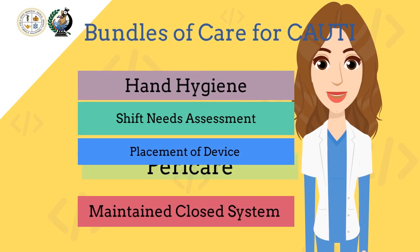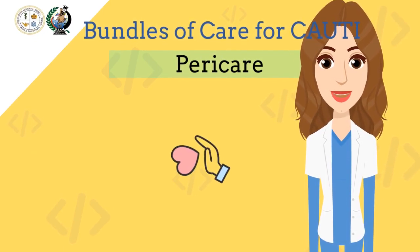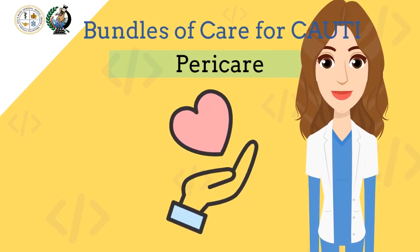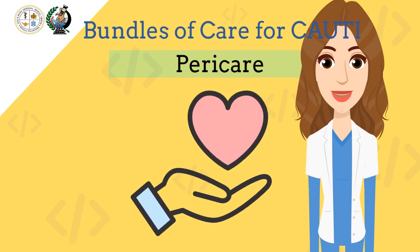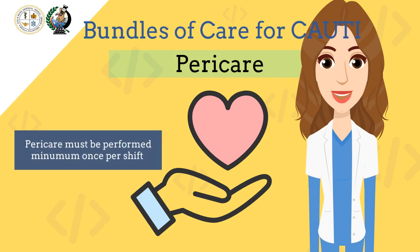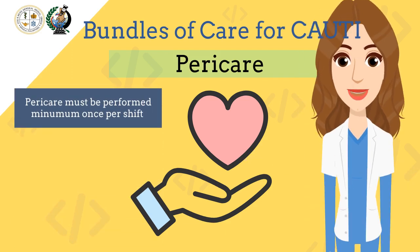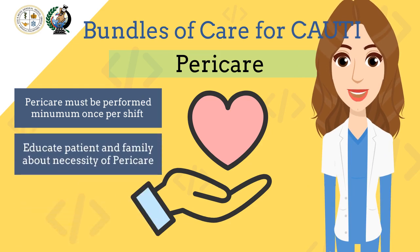For the fourth intervention, we have pericare. Perineal care, usually called pericare, means washing the genitals and anal area. Pericare can be done during a bath or as a separate procedure. It prevents skin breakdown of the perineal area, itching, burning, odor, and infections. Pericare must be performed a minimum of once per shift, even if your patient has an indwelling catheter device. Educating the patient and support groups such as family about the necessity of pericare and compliance to promote infection prevention is a must.